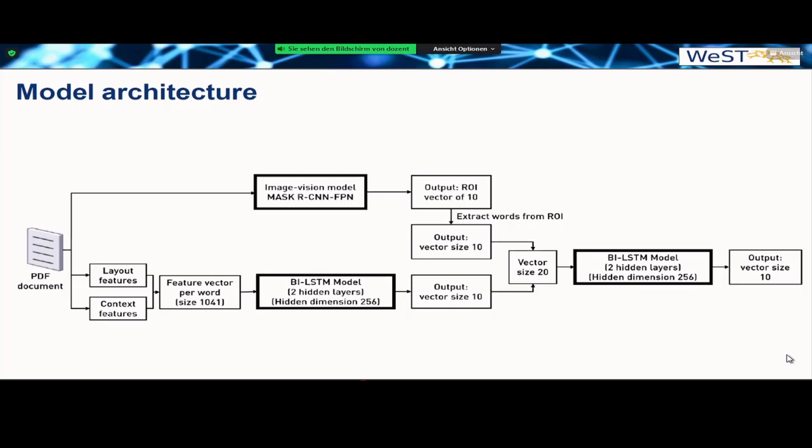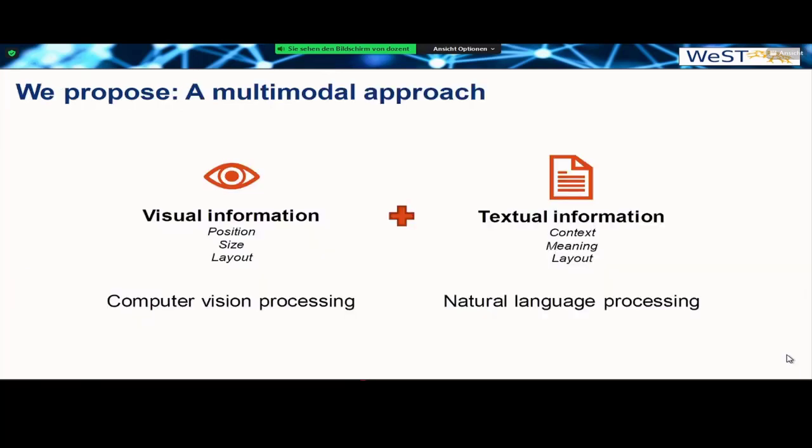The first step is a computer vision model that extracts metadata and gives us an output of ten for each region of interest, where we have nine classes and the tenth class is classified as other, as well as the NLP, which does the same for our document. Then both outputs of the image-vision and the NLP model are combined together and fed into a last model, which is as well a BiLSTM model that takes both outputs and gives us the final metadata extraction for all our elements.